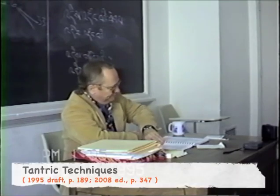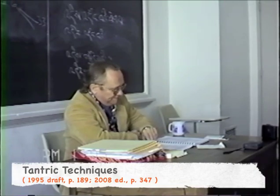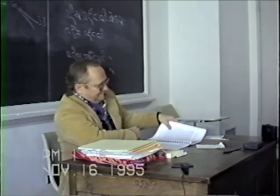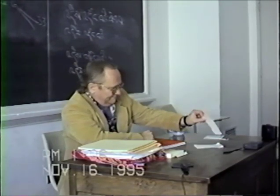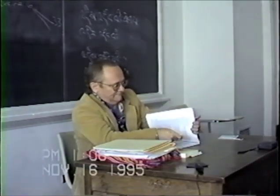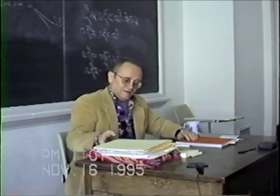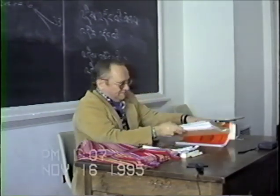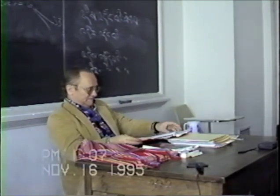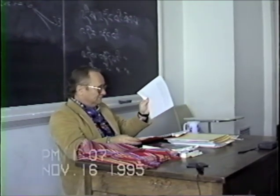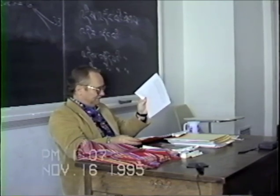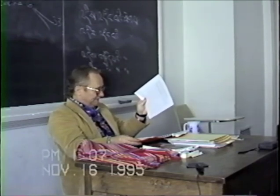On page 189, the four tantras and the four levels of faculties — that's clear enough. It appears we do have some time to get to the fourth topic. There were three types of beings and the three vehicles, then deity yoga, then the difference between sutra and tantra, then the difference between the four tantras. And now: the clear light — a basic religious experience.